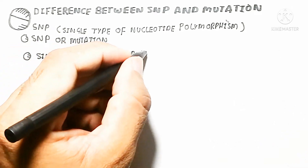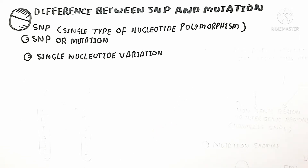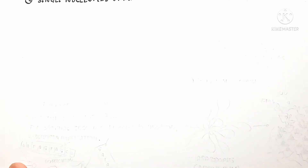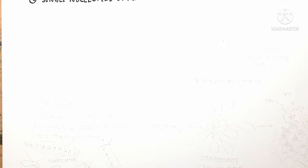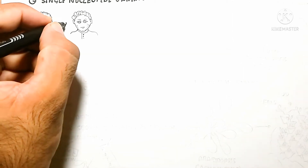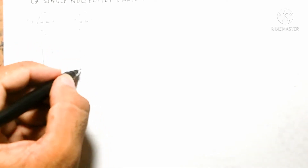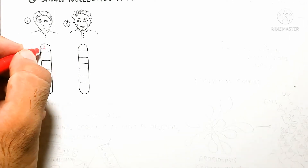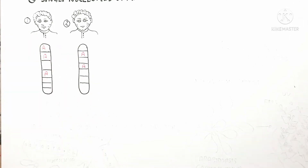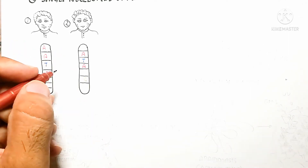First, let's discuss single nucleotide variation. A single nucleotide variation is present when the whole genome contains one nitrogenous base difference compared to another individual in the same population. For example, in Homo sapiens, individuals of the same species can contain one nucleotide difference. This one nucleotide difference is called a single nucleotide variation.